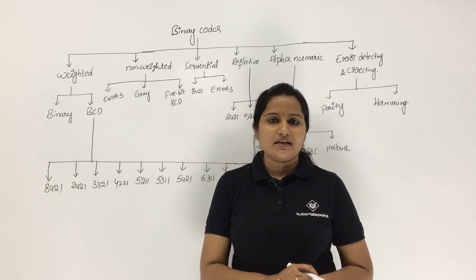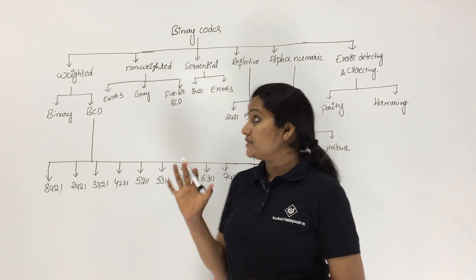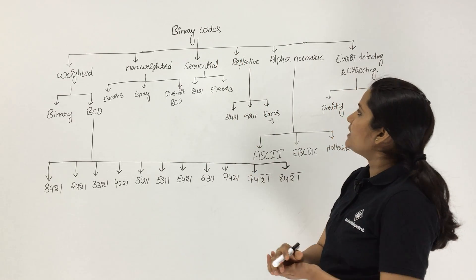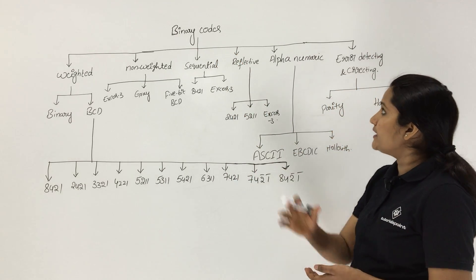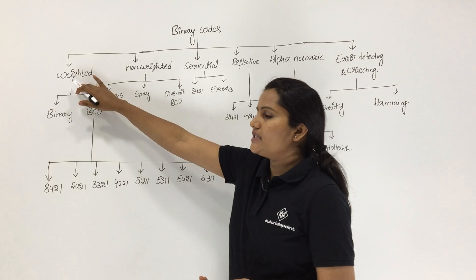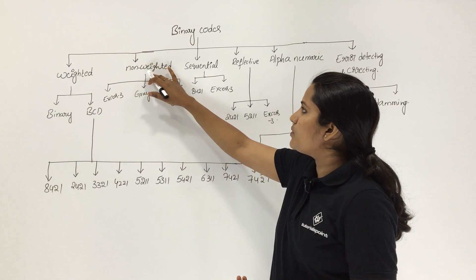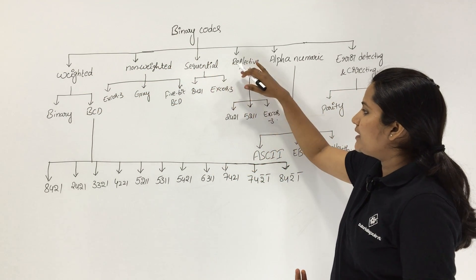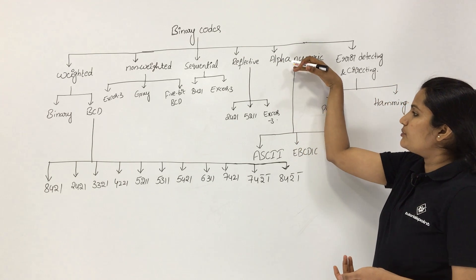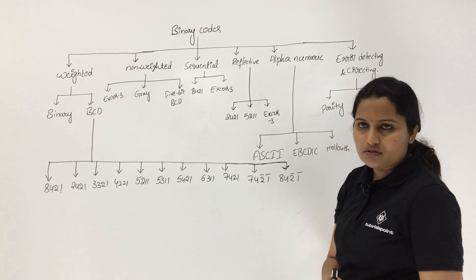We are having a classification for binary codes. Binary codes are initially classified into six types: weighted codes, non-weighted codes, sequential, reflective, alphanumeric, and error detecting and correcting codes.